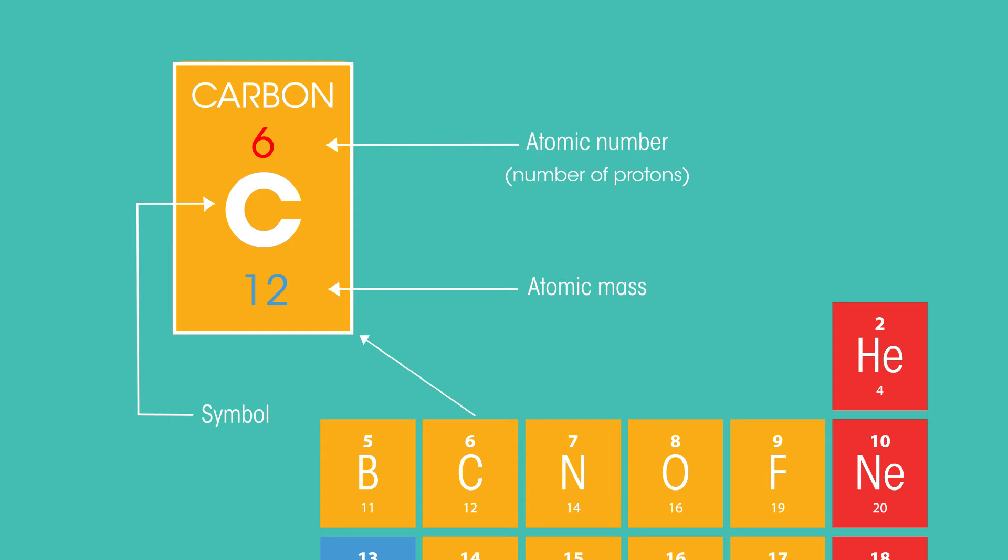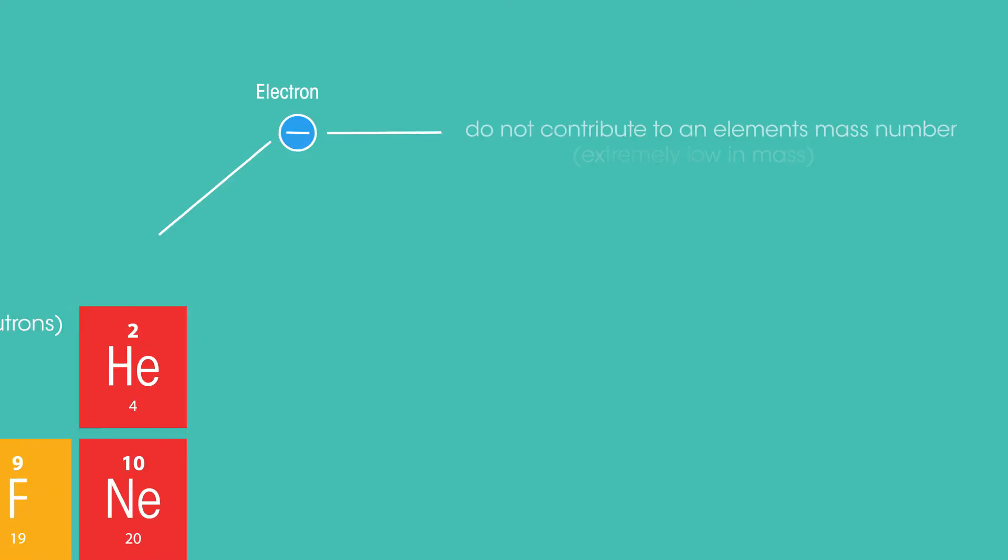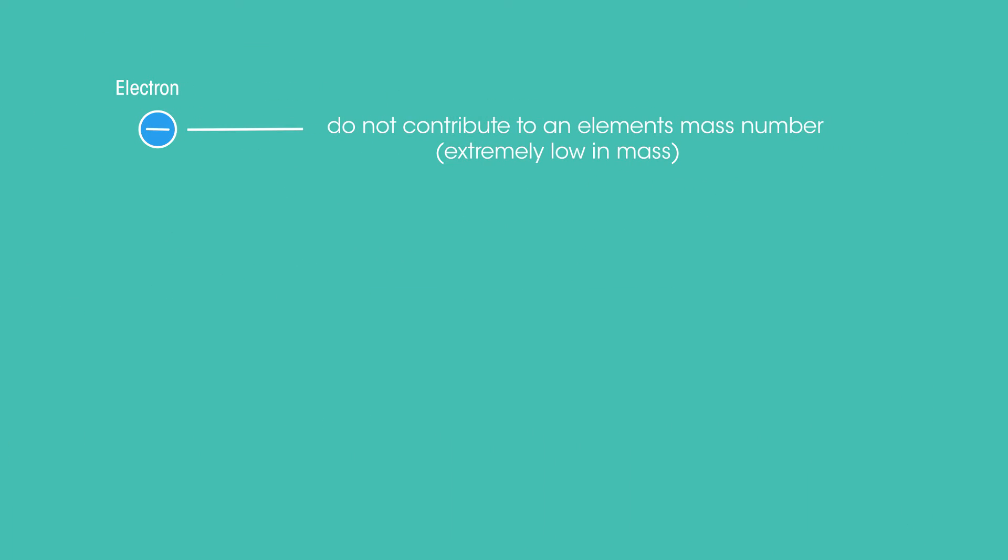The bigger number is the mass number, aka atomic mass. And it's the sum of the number of protons and neutrons. Electrons do not contribute to an element's mass number, because of their extremely low mass.